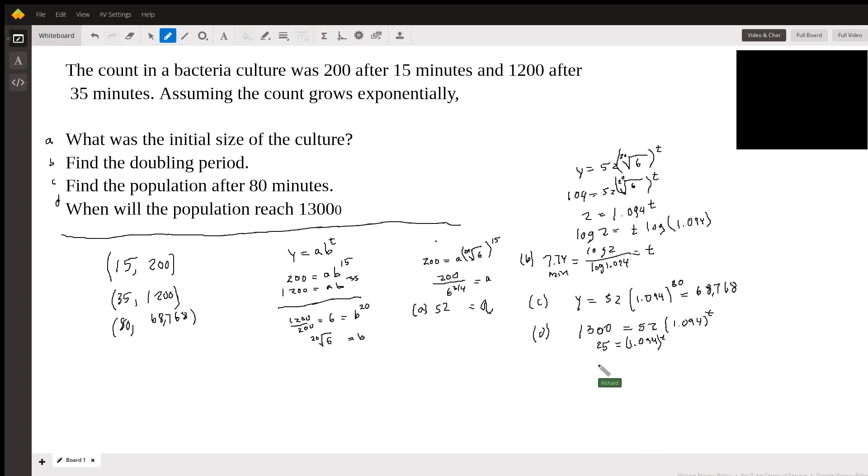And once again, we're going to take the log of both sides. Okay, so we'll take the log of 25 and divide that by the log of 1.094. And so T here is going to be roughly 36 minutes. And if you think about that answer.